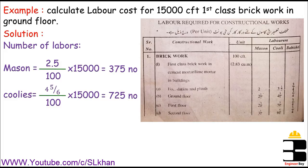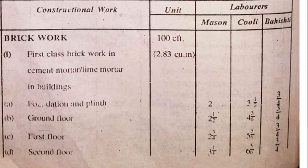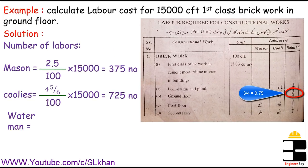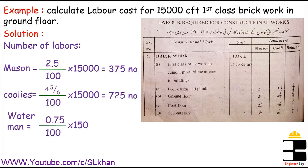Next comes watermen. If you look at the watermen column, we need 0.75 watermen per 100 CFT. So if we need 0.75 watermen per 100 CFT, then how many do we need per 15,000 CFT? That's the same calculation we did for masons and coolies — we get 113 watermen.